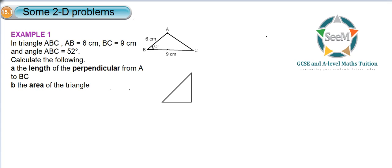Example 1 states that triangle ABC, which is this triangle here, has AB equals 6 cm, that's AB over here, BC equals 9 cm, and we've got this angle here, angle ABC, as 52 degrees. The question states that we should calculate the length of the perpendicular line from A to BC.